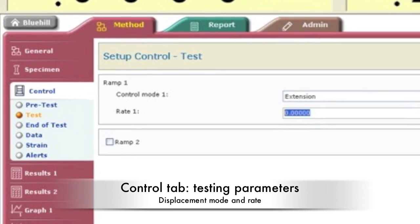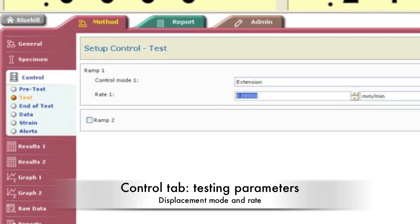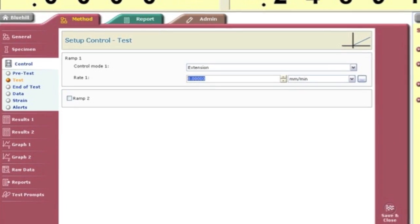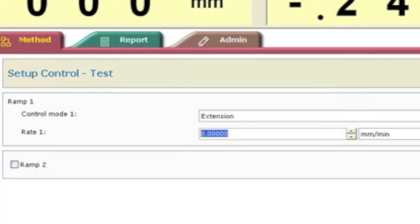The control tab describes the test. Select extension for mode of displacement, then specify the rate of extension. Most use 5 mm per minute or 50 mm per minute, depending on if you want a slow or fast test.